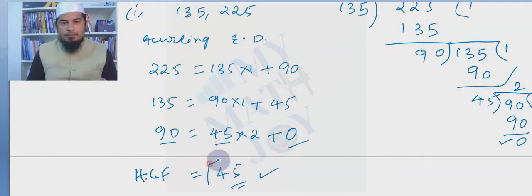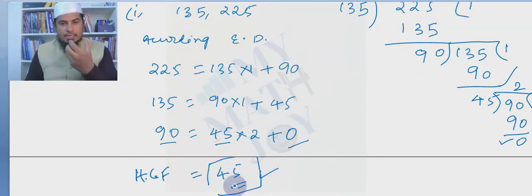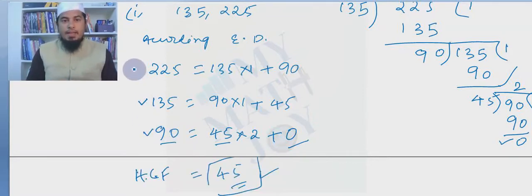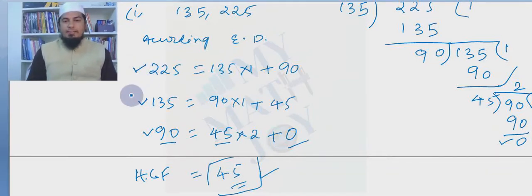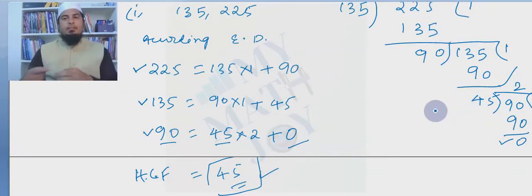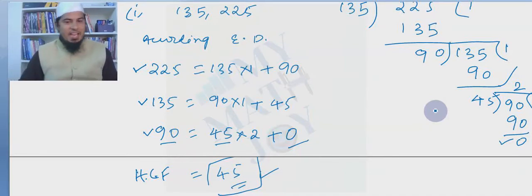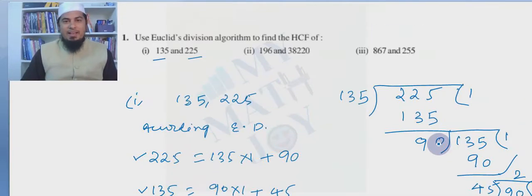45 is a common factor for 90, for 135, and for 225. So HCF is 45. This is the sixth-class continuous division method, but we are representing each division step in the form of Euclid's division lemma to get the answer.